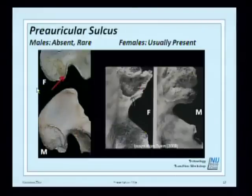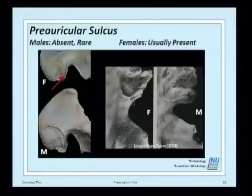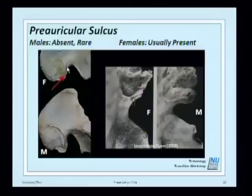The preauricular sulcus is located inferior to the auricular surface, where the sacrum articulates with the two halves of the pelvis. These traits are very important because we don't often find the pelvis fully intact — it's generally in sections: two os coxae and the sacrum in the middle. If the preauricular sulcus is present, the individual is probably female; if absent, mostly male. However, I don't like to say definitely male if it's absent, because a female can lack this groove.